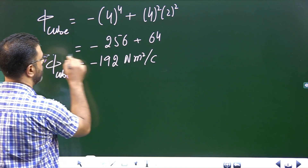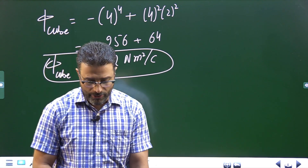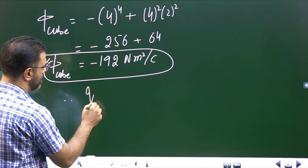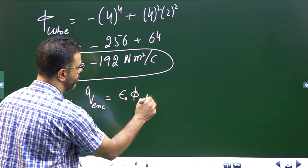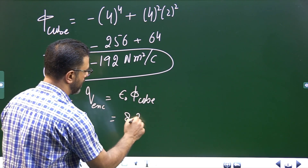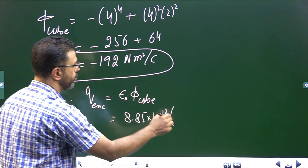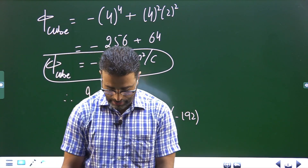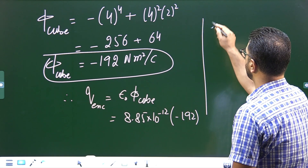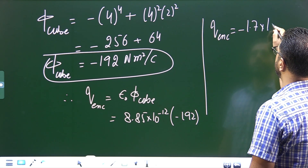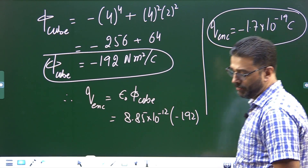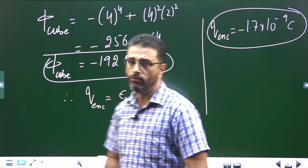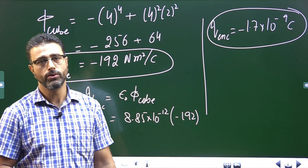Now we find the charge enclosed by the cube. By Gauss's Law, q_enclosed = ε₀ × Φ = (8.85 × 10⁻¹² C²/N·m²) × (−192 N·m²/C). This gives q_enclosed = −1.7 × 10⁻⁹ coulombs.